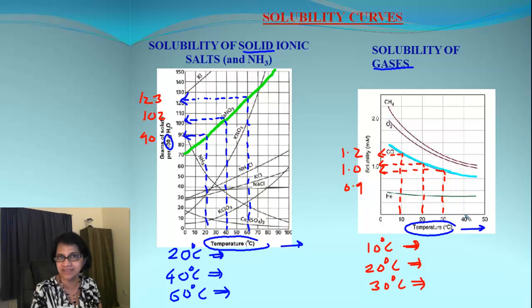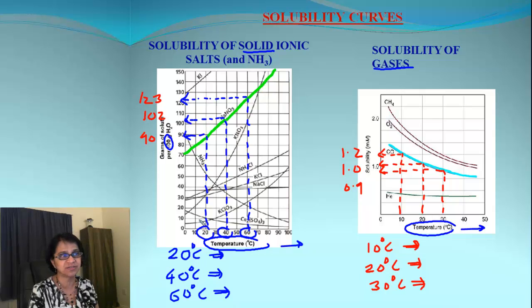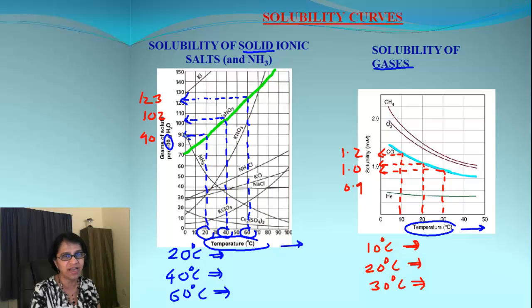To find the amount dissolved, we take each point on the graph. We selected temperatures of 20, 40, and 60 degrees. To find how much solid is dissolved, we go from each temperature upward until we touch the graph, then draw a perpendicular line across until it touches the y-axis scale.